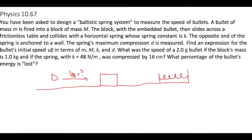I have been asked to design a ballistic spring system to measure the speed of bullets. A bullet of mass little m is fired into a block of mass big M. The block with the embedded bullet then slides across a frictionless table and collides with a horizontal spring whose spring constant is k. The opposite end of the spring is anchored to a wall. The spring's maximum compression, d, is measured.